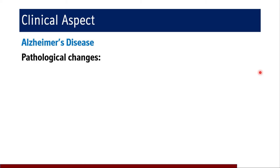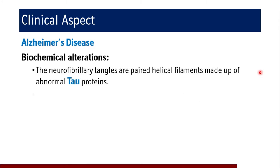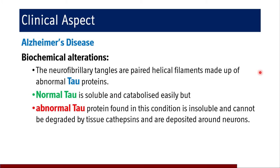The pathological changes in Alzheimer's disease include neurofibrillary tangles in the CNS, formation of senile neuritic plaques, and cerebral amyloid deposits — these are the pathological hallmarks. Biochemically, the neurofibrillary tangles are paired helical filaments made up of abnormal tau proteins. Normal tau is soluble and easily catabolized, but the abnormal tau protein found in this condition is insoluble, cannot be degraded by tissue cathepsins, and is deposited around neurons, resulting in neurofibrillary tangles.